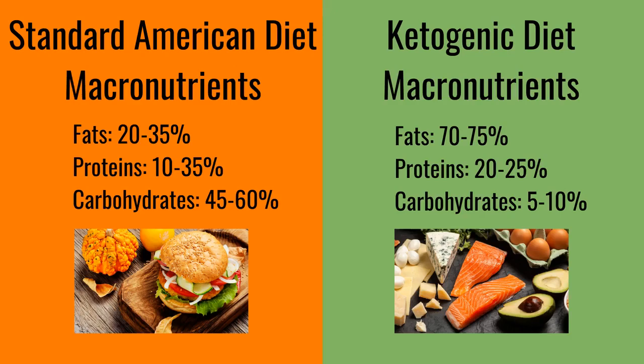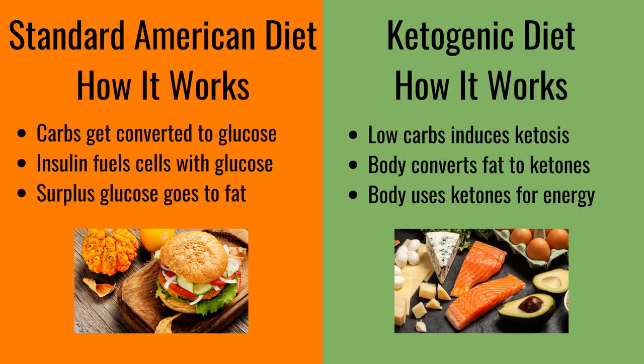Let's compare the keto diet to the standard American diet. On a macronutrient level, the keto diet is roughly fats 70-75%, proteins 20-25%, carbohydrates 5-10%. On a standard American diet, macronutrients break down to fats 20-35%, proteins 10-35%, carbohydrates 45-60%. On the standard American diet, the body converts carbohydrates into glucose as its primary source of energy, and it uses insulin to bring the glucose into its cells.